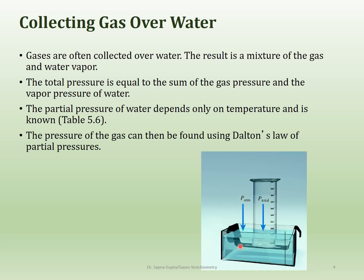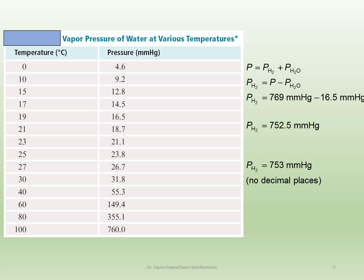This diagram shows how the gas is actually collected inside. Here's an inverted cylinder, and the gas is collected in here, displacing the water. The pressure being exerted is the pressure of the gas plus the water. Here is the chart for the vapor pressure of water at different temperatures — these are standard values you don't need to memorize. At 0 degrees Celsius the pressure is 4.6 mmHg, and as the temperature increases, so does the pressure of water, because vaporization is increasing.